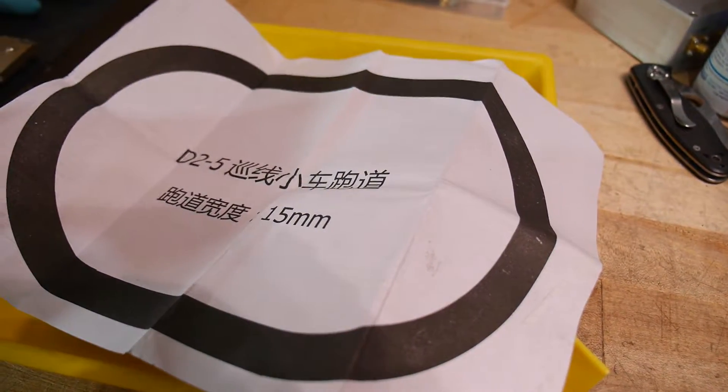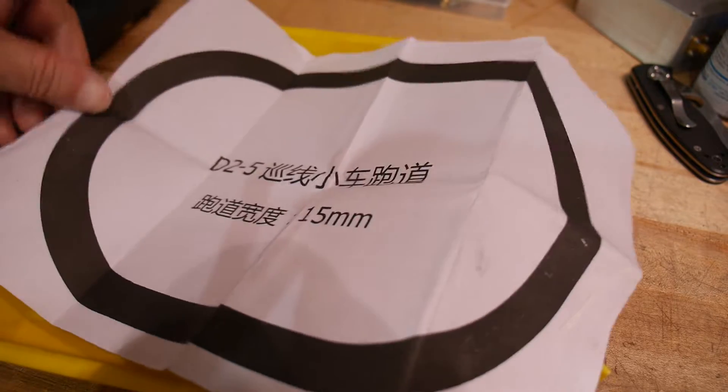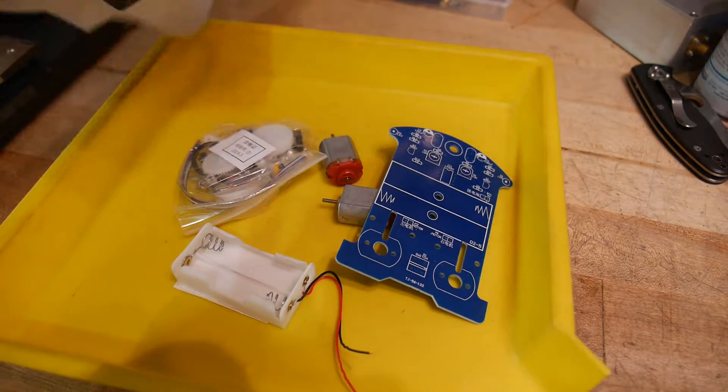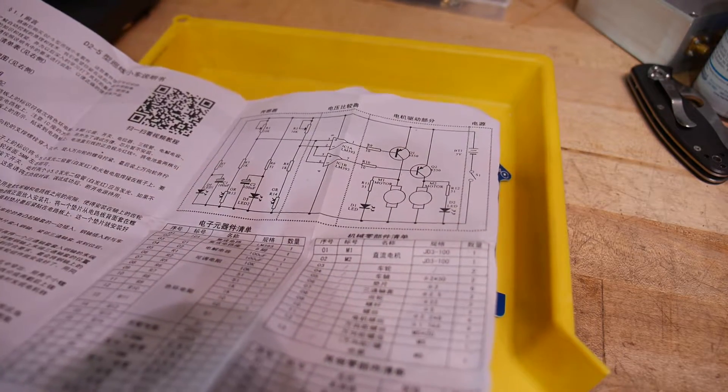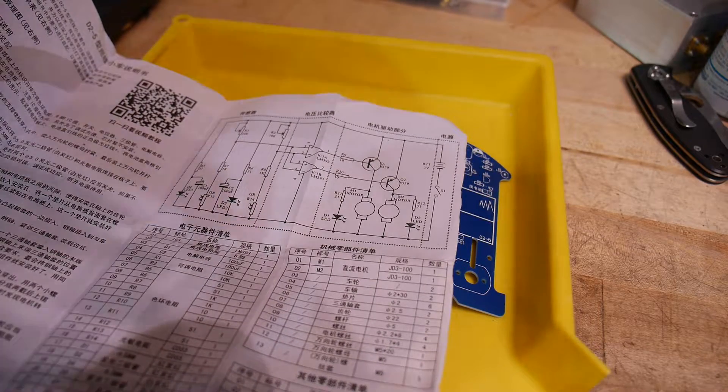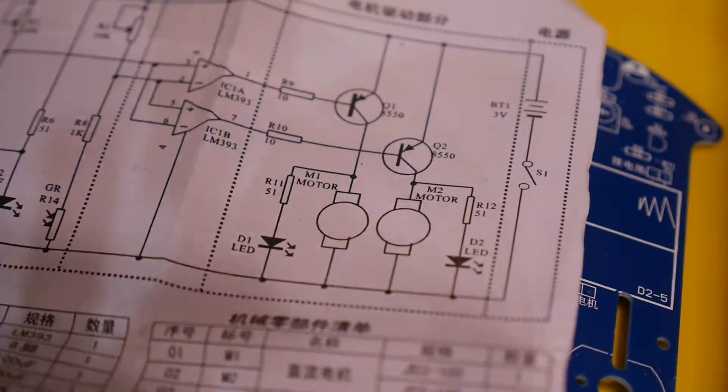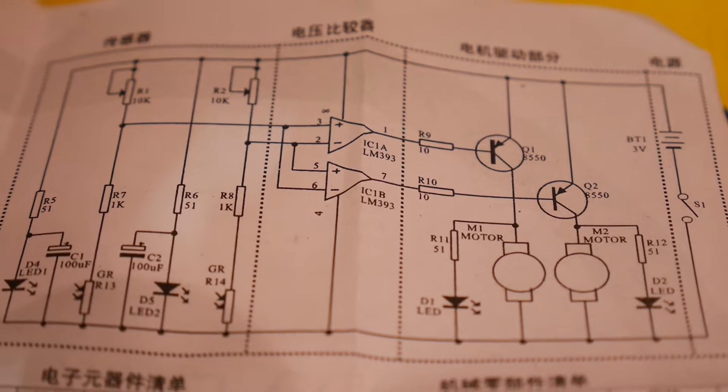So this is a line following robot, and it gives you a line. When we get it done, it should be able to traverse this loop here. We have a lot of things in Chinese, there's a Q code. Maybe we'll go to the Q code and see if there's anything other than Chinese. There's a schematic here, so we can look at that.